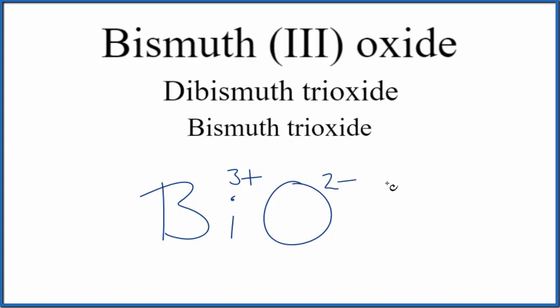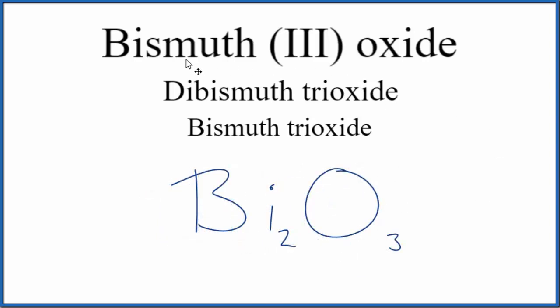So to get these charges to balance, we'll use a bit of a trick. It's called the crisscross method. We'll move the 2 down here and the 3 over here. Let's get rid of these. And that makes the formula for bismuth 3 oxide, Bi2O3.